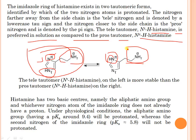Histamine has two basic centers: namely the aliphatic amino group and whichever nitrogen atom of the imidazole ring does not already have a proton. Out of the two nitrogen atoms in the imidazole ring, the one without a proton serves as a basic center. Under physiological conditions, the aliphatic amino group with a pKa of around 9.4 will be protonated, whereas the second nitrogen of the imidazole ring will not be protonated.